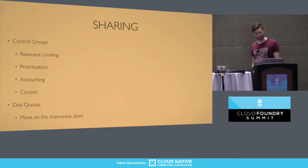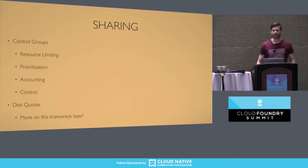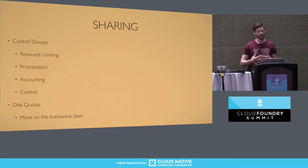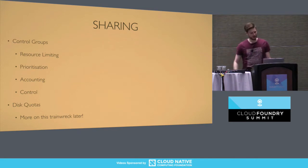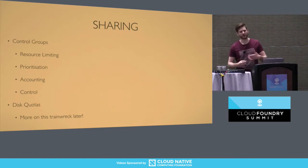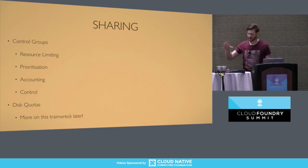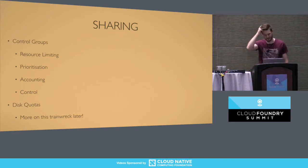Talking about fair sharing — this is really satisfied in two ways. In Garden we've got control groups, or cgroups. If Linux namespaces deal with what a process can sort of see, cgroups deal with what a process can really use: things like memory limits, disk throughput, and CPU scheduling. And then with disk quotas — ensuring that processes can't write so much to disk that other processes are unable to — we start to deal with this sort of fair sharing. Disk quotas I'm going to come back to quite a lot later, because they've been a bit of a pain point for us.